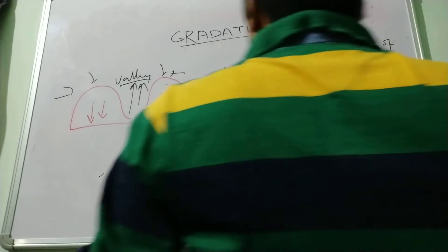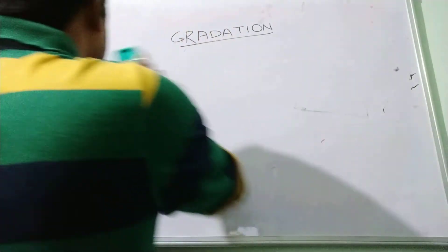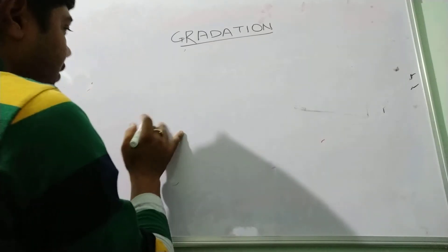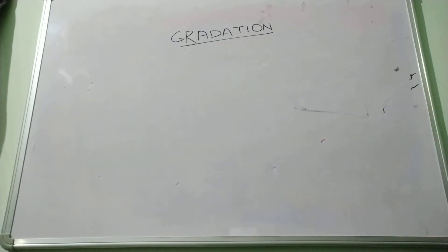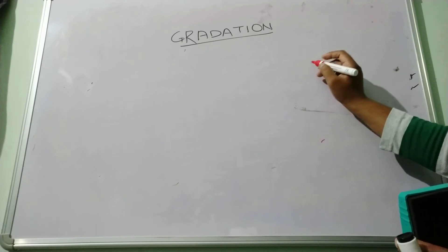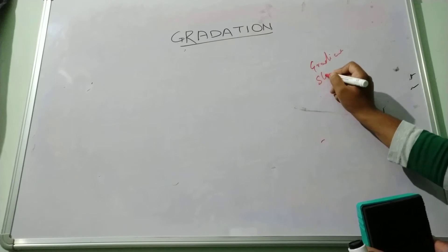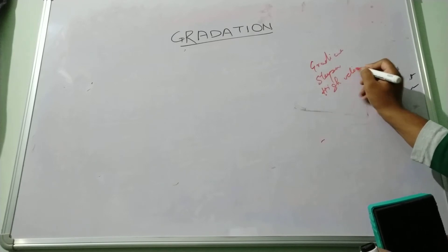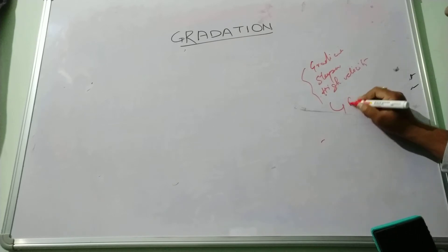So there is a close relationship between gradation, degradation, and aggradation. How? For example, the river is flowing in the mountainous regions. When the river flows through mountainous regions, its gradient is steeper slope and high velocity. These factors help in the erosion of the material.